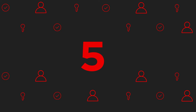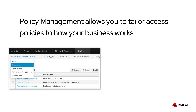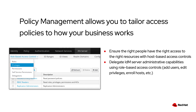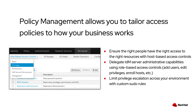Number five, policy management inside identity management in RHEL allows you to tailor access policies to how your business works. This ensures that the right people have the right access to the right resources with host-based access controls. To ensure the appropriate amount of least privilege, you are also able to delegate IDM server administrative capabilities using role-based access controls — this can be adding users, editing privileges, or enrolling hosts. This allows you to limit privilege escalation across your environment with custom sudo rules.